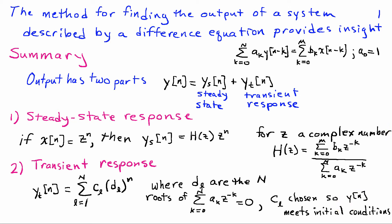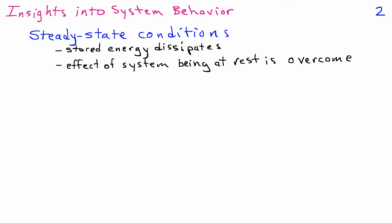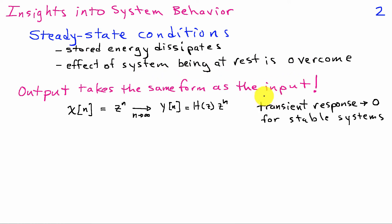That's a brief summary of our solution technique for finding the output given the input and initial conditions. A steady-state condition means that any initial energy stored in the system dissipates. The output in steady state takes the same form as the input — if I apply z^n, then when n gets large, the output is just a scaled version of z^n, where h(z) is some constant. This is because the transient response for stable systems must go to 0.